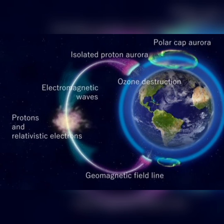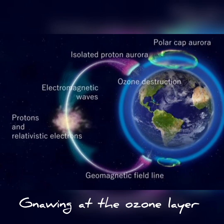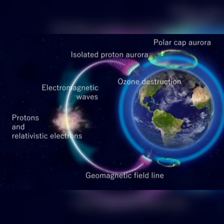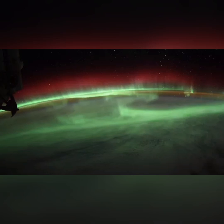Also known as the stratospheric ozone layer, as this diagram clearly shows, a coronal mass ejection, or CME, is a large explosion of plasma and magnetic field from the sun's atmosphere, which can trigger extensive aurora displays.